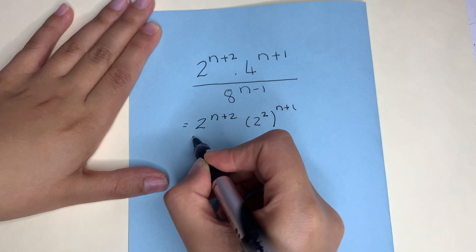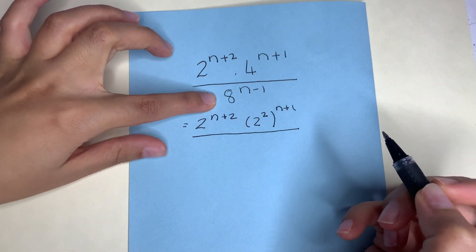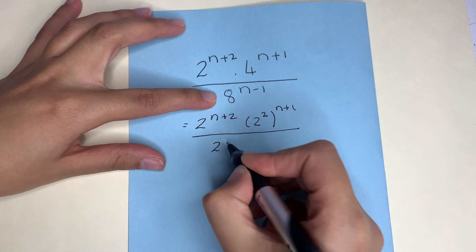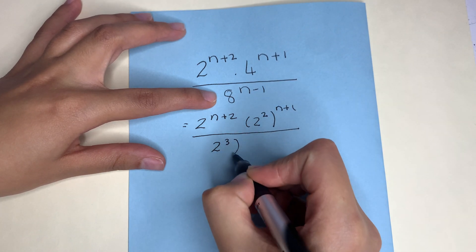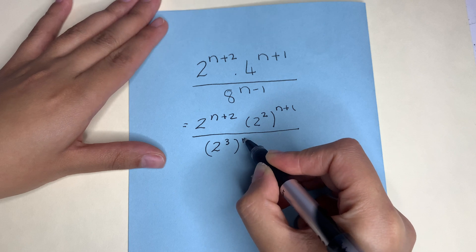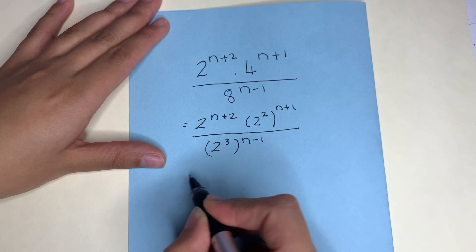Now for the denominator, 8 we can express as a prime base of 2 to the power of 3. Keep it in brackets again because we are going to distribute in the next step.